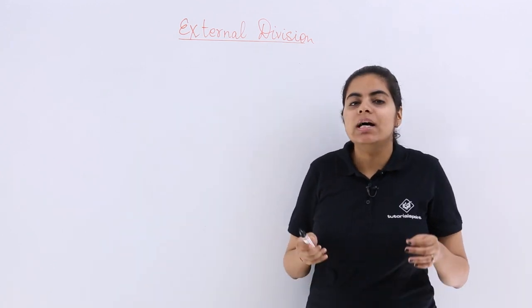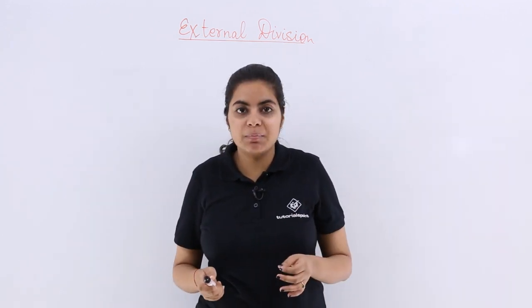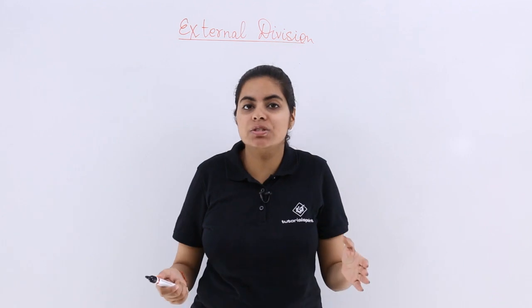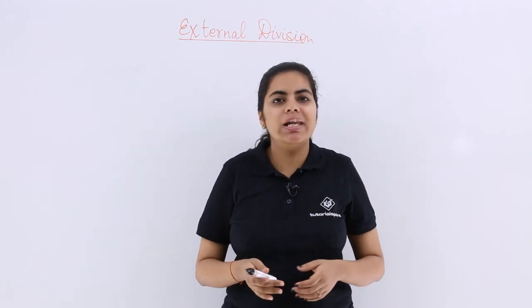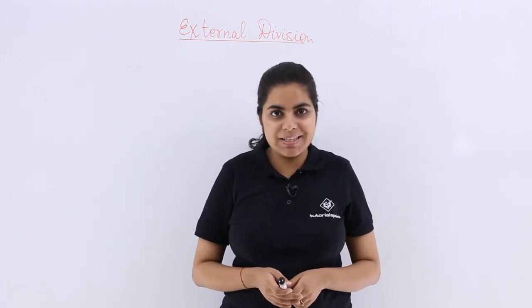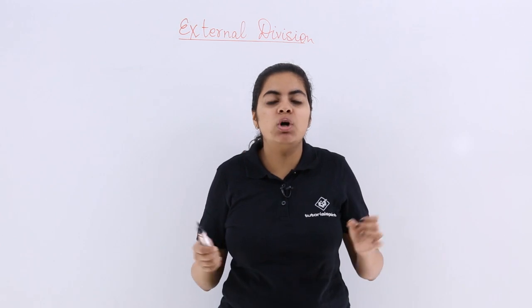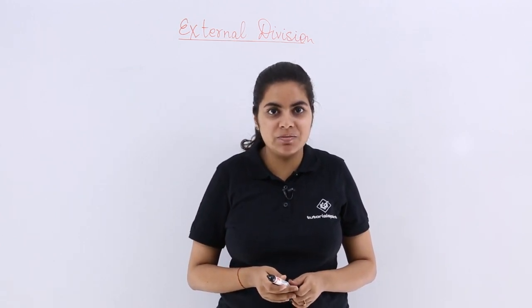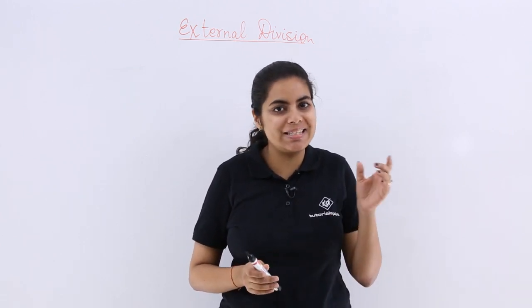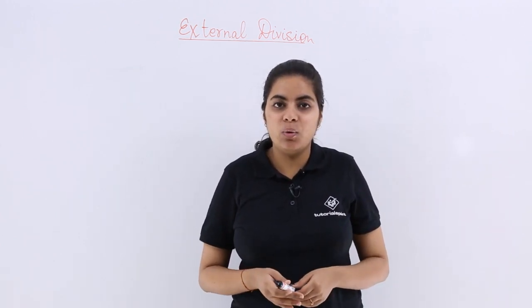So as you know, we are going to talk about a line segment and the position vector of its endpoints. So let AB be a line segment and small a and small b be the position vectors respectively of the points A and B.